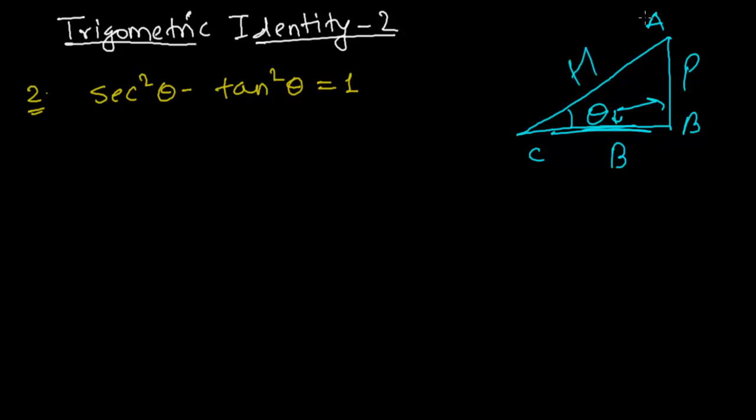So let's apply the Pythagorean theorem in this right angle triangle. We'll get that H² equals P² plus B². It means the square of the hypotenuse is always the sum of the perpendicular squared and the base squared.